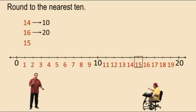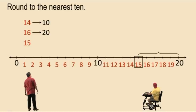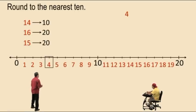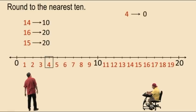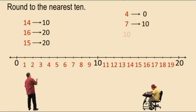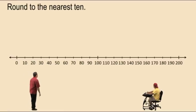Now what about the number 15? 15 is right in the middle of 10 and 20. In this class, when we are right in the middle, we round up — that means we go to the right on the number line — so 15 rounds to 20. How about 4? 4 is in between 0 and 10, but it's closer to 0, so 4 rounds to 0. Number 7 is also between 0 and 10 but it's closer to 10, so 7 rounds to 10. And 10 rounds to 10.